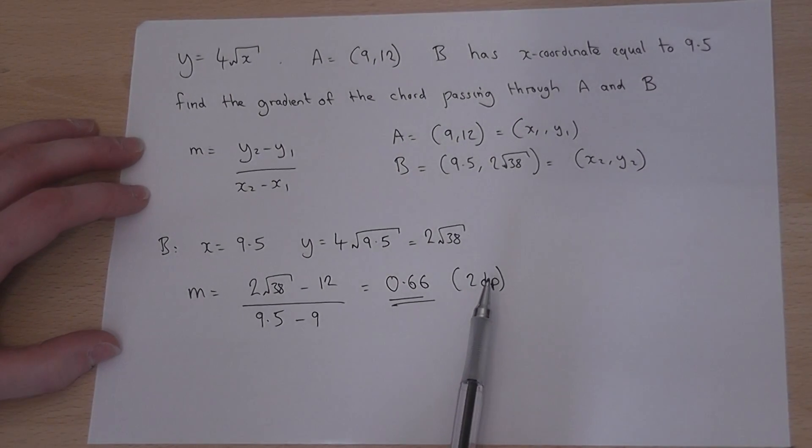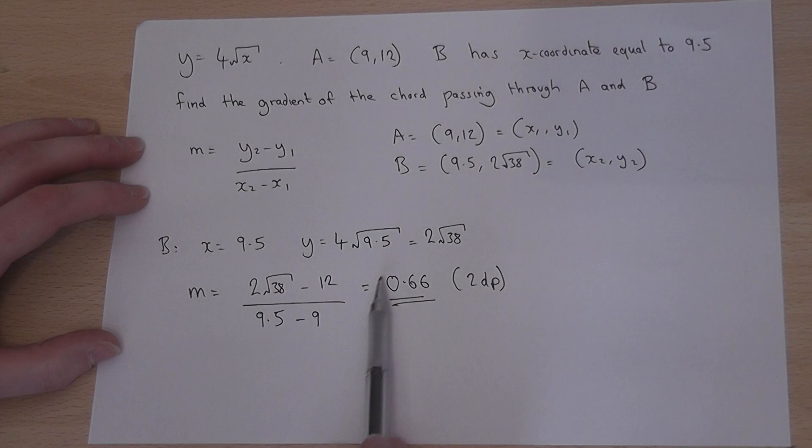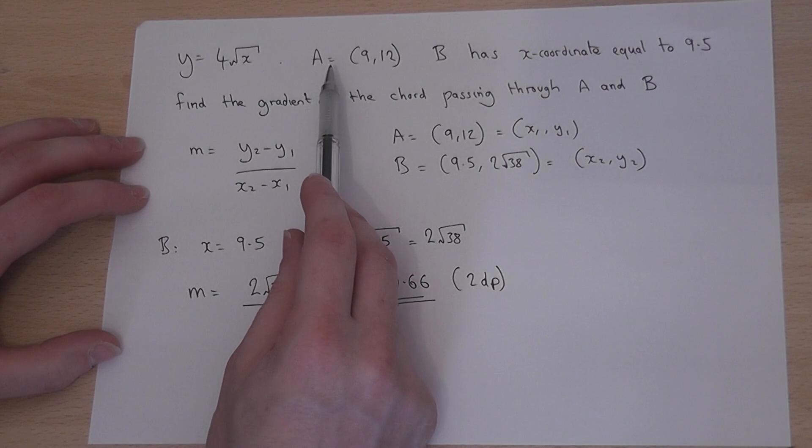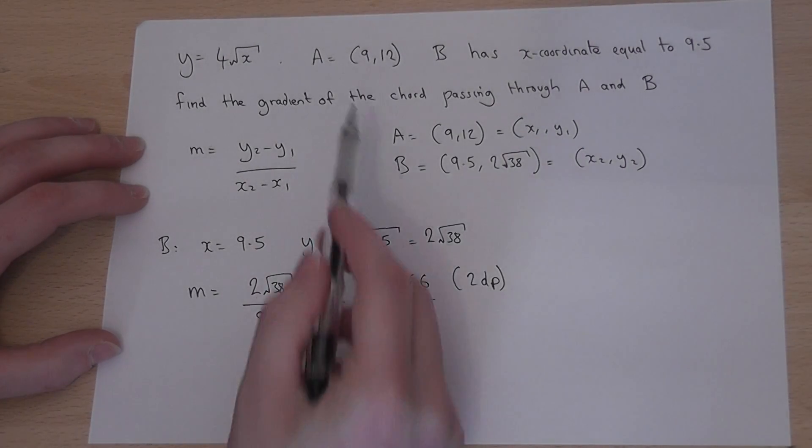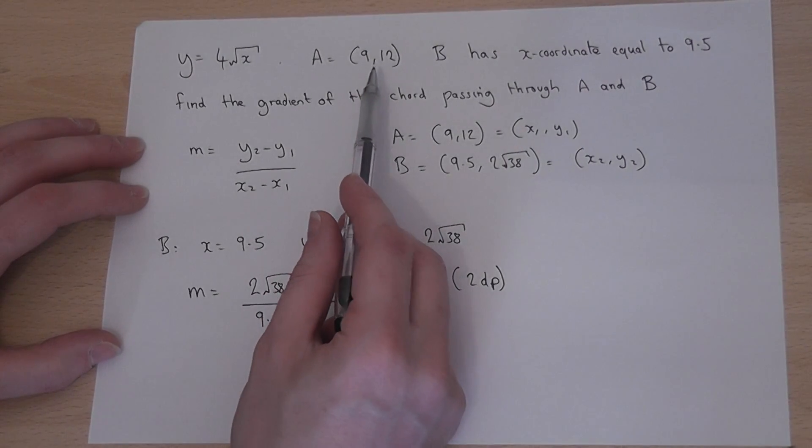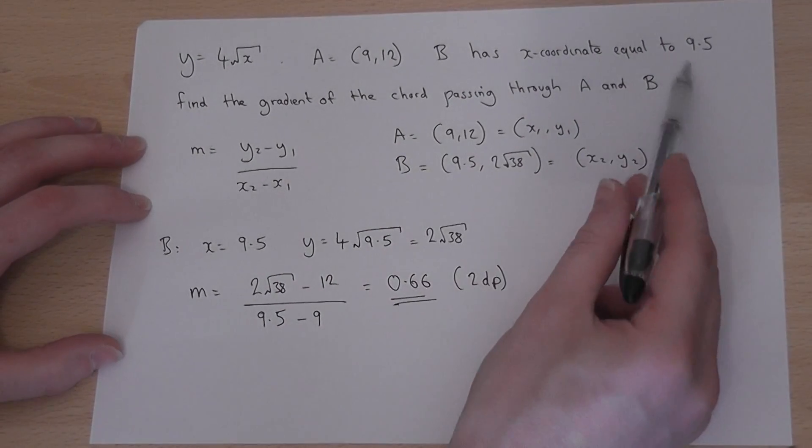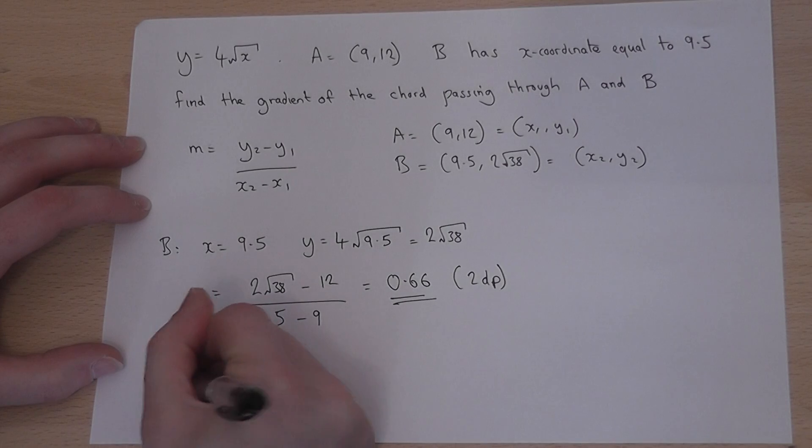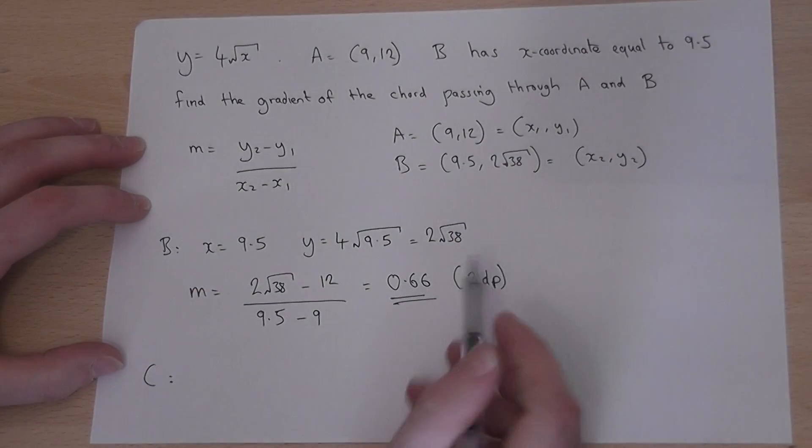Now, the final point here is that this answer acts as an approximation to the gradient at coordinate A. And if I wished to improve my estimation of the gradient at coordinate A, then rather than picking B to equal 9.5, I could pick another coordinate which is closer than 9.5.